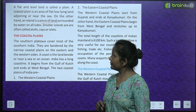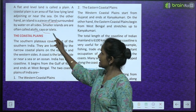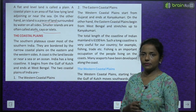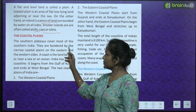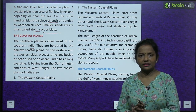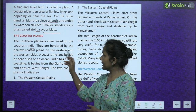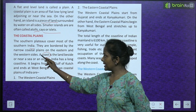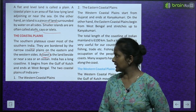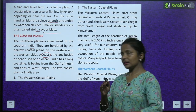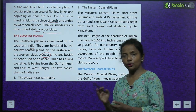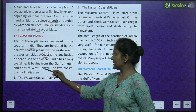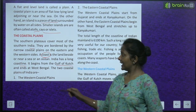Smaller islands are often called atolls or isolates. Now, the coastal plains: the southern plateaus cover most of southern India — joh southern plateaus hain woh zaadatar southern India ko cover karte hain. They are bordered by narrow coastal plains on the eastern and western sides. A coast is the land besides or near a sea or an ocean. India has a very long coastline — it begins from the Gulf of Kachchh and ends in West Bengal.